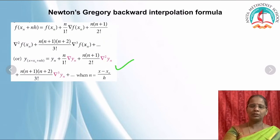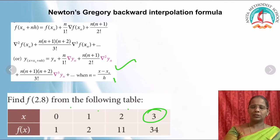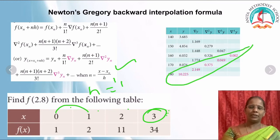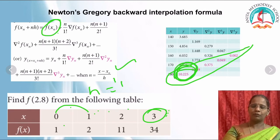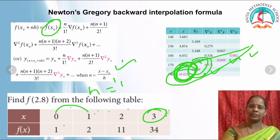For the backward formula, n = (x - xₙ)/h because the last observation is taken. xₙ is the last x value, and h = 1 since data is equally spaced. From the backward difference table, take f(xₙ), then the first-order, second-order, third-order, and fourth-order backward differences: ∇f(xₙ), ∇²f(xₙ), ∇³f(xₙ), ∇⁴f(xₙ) — apply these values in the formula.